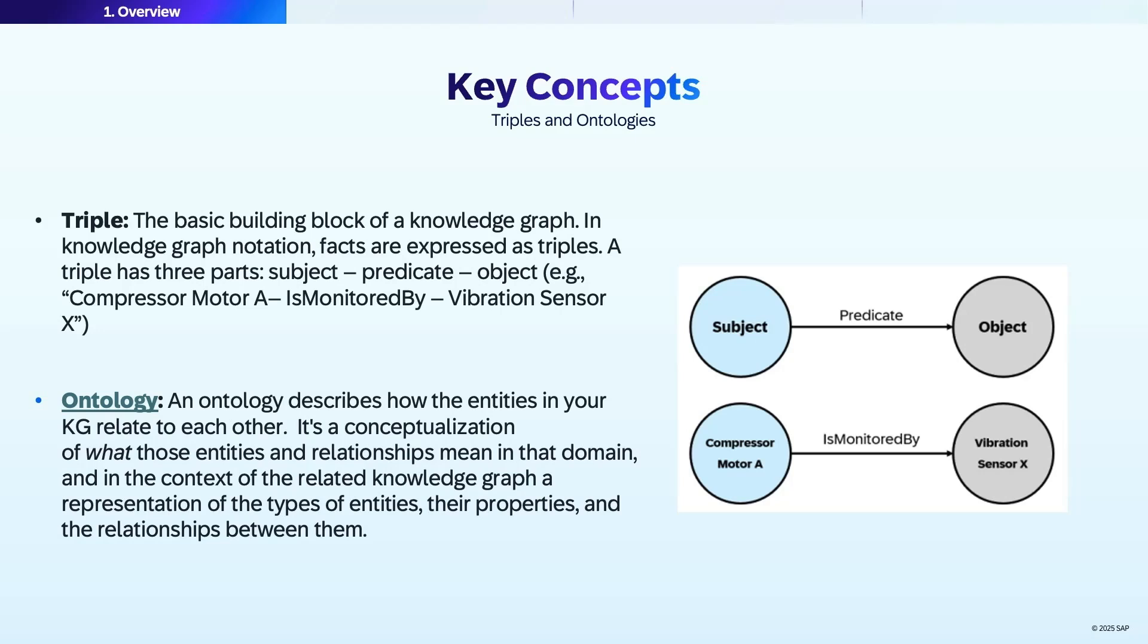An ontology describes how the entities in your knowledge graph relate to each other. It's a conceptualization of what these entities and relationships mean in that domain and in the context of the related knowledge graph. A representation of the types of entities, their properties, and the relationships between them.